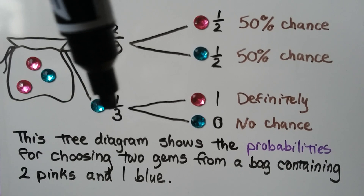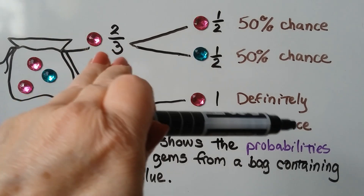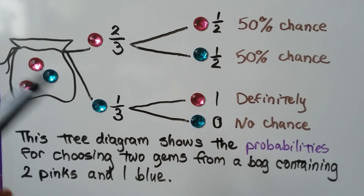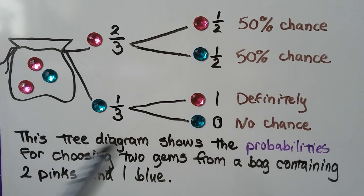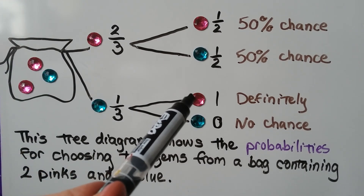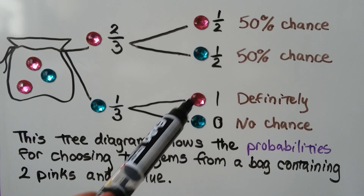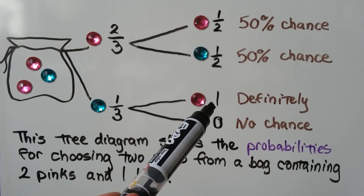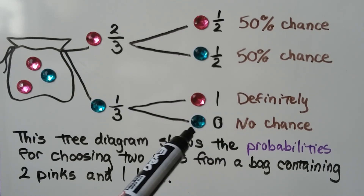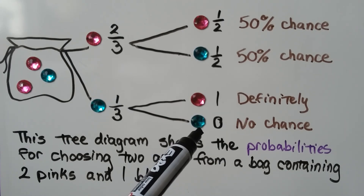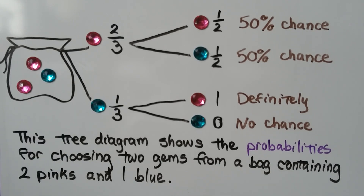If we pick the blue one, the blue is gone and there are two pinks left. So we would have a 100% chance of getting a pink now because we took the blue one out — the probability is one — and we would have a zero probability of getting a blue one again because we took that one blue out.